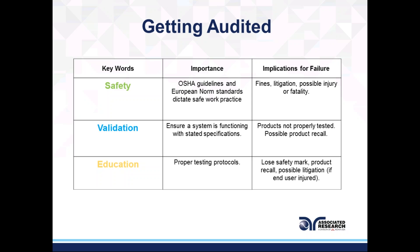Next is validation. Any auditor, whether from UL, TUV, or any other agency, wants to make sure that the test system or hardware you've acquired is functioning within stated specifications. The implications for failure with validation could be that products are not properly being tested. If a test system is not configured or set up correctly, there's a big chance that bad products may falsely pass. So there are many items to take into account.